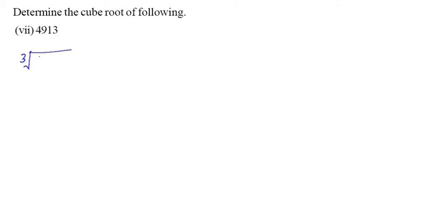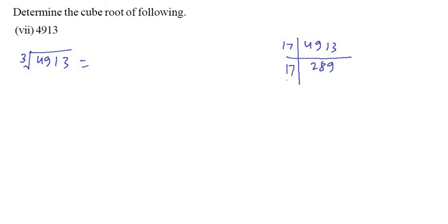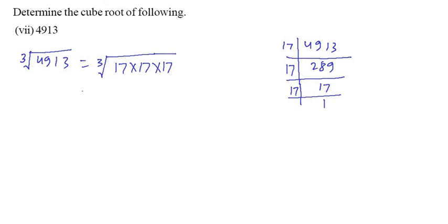Let us see the next one — the seventh part. Cube root of 4913. Let us start the prime factorization of 4913. It is divided by 17, so we get 289; further divided by 17, we get 17; and further divided by 17, we get only 1. So we can write cube root of 17 × 17 × 17. These are triplets, so we can write only 1, and that is 17. So 17 is the answer of cube root of 4913.